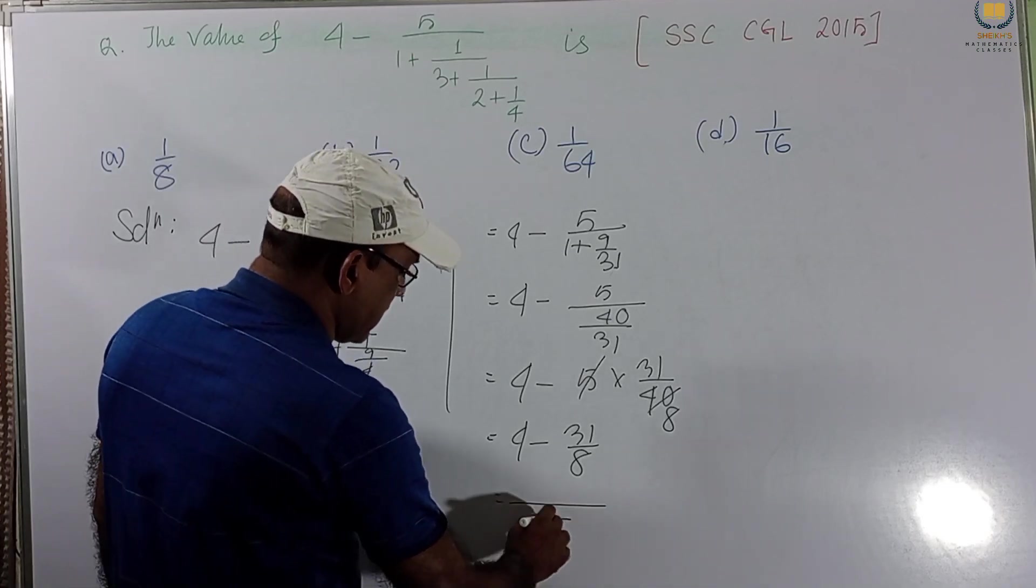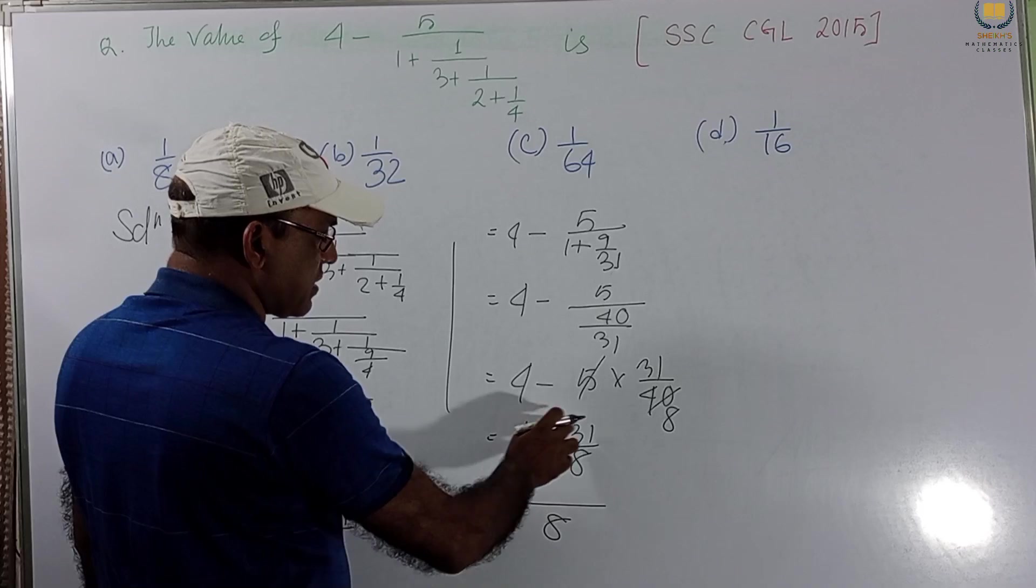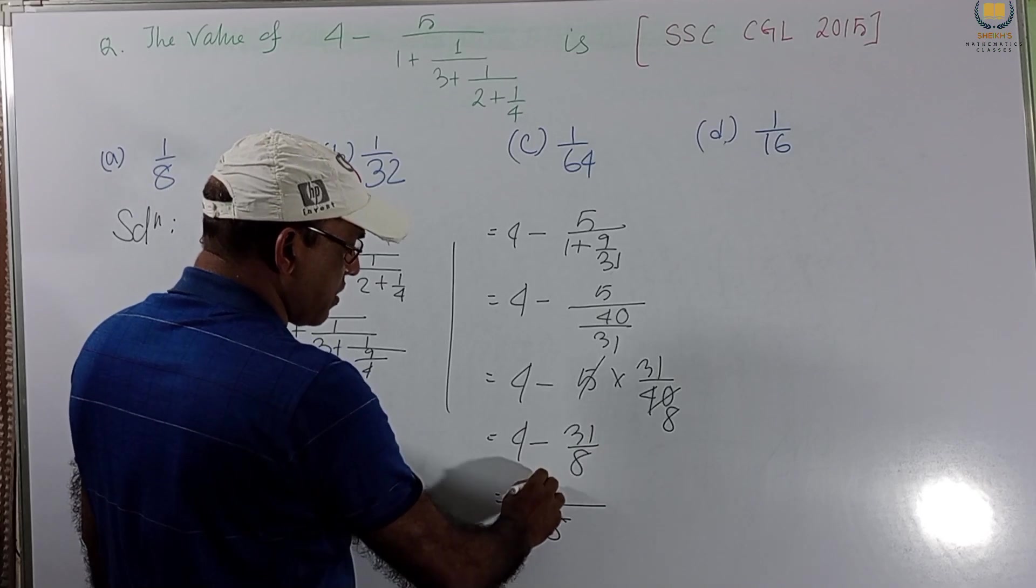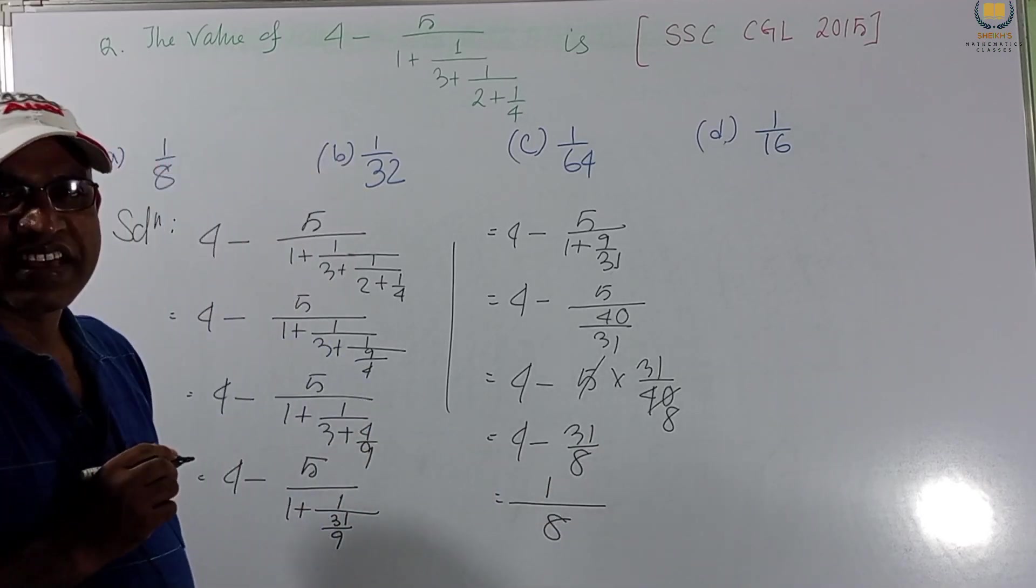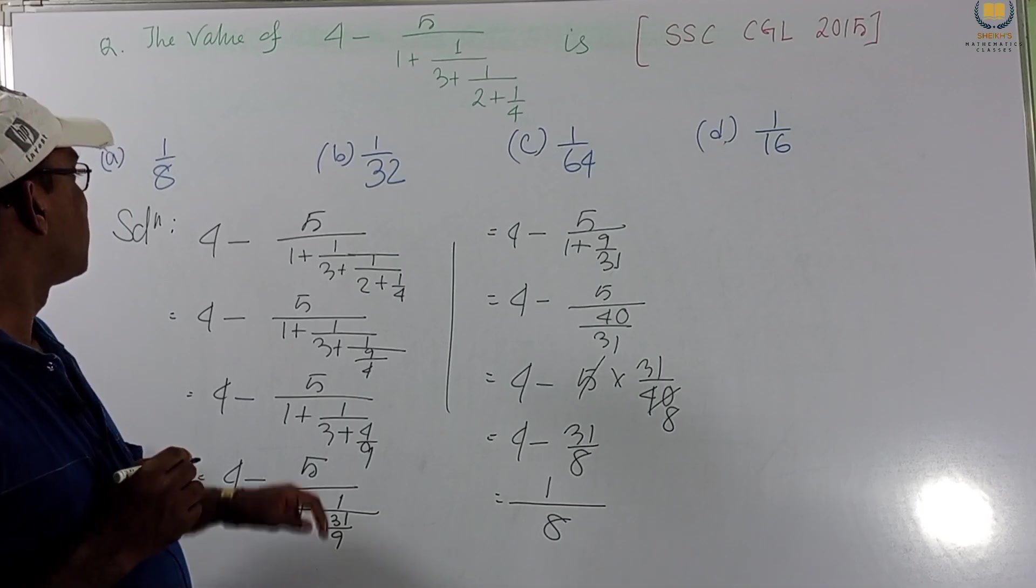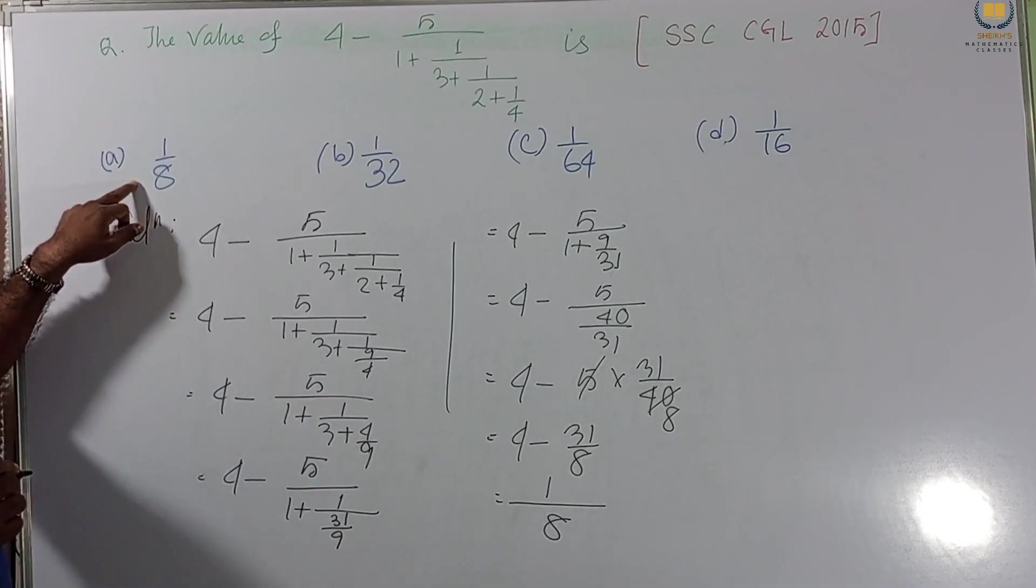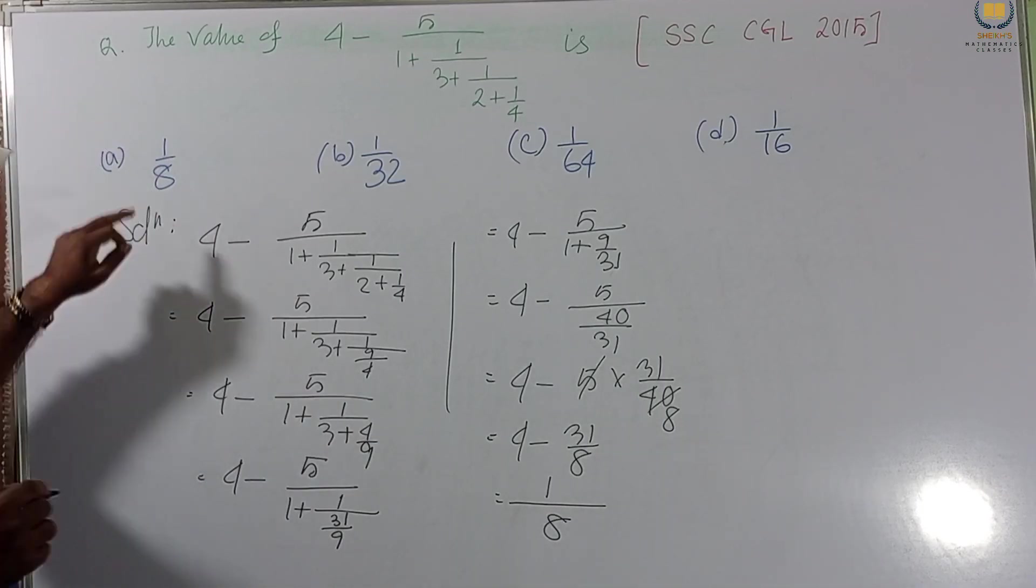4 minus 31 by 8. We get this. Again, taking LCM. LCM is 8. This is 32 minus 31. This is 1 by 8. Answer is 1 by 8. So, option A. A is our answer. So, this is our answer.